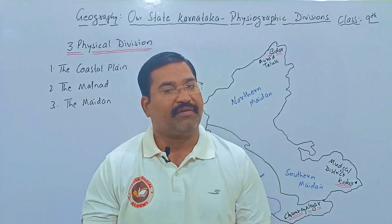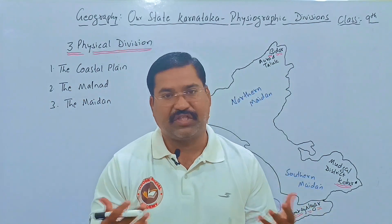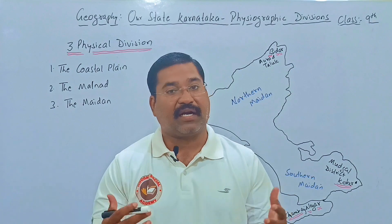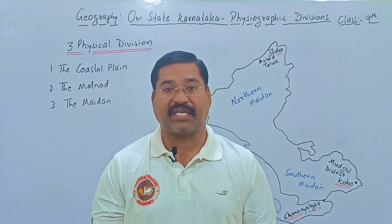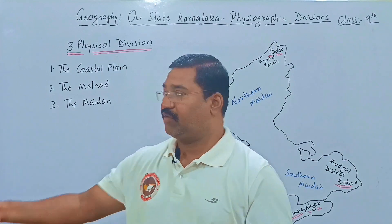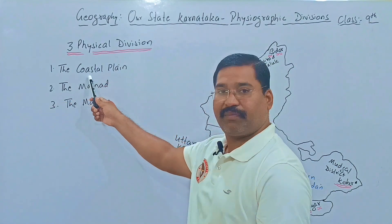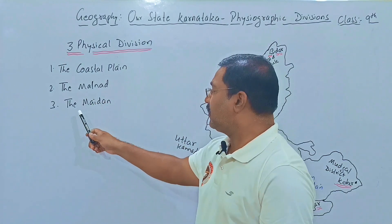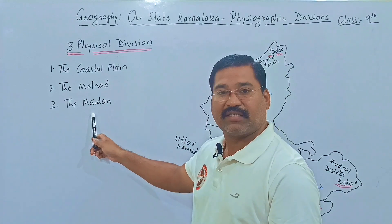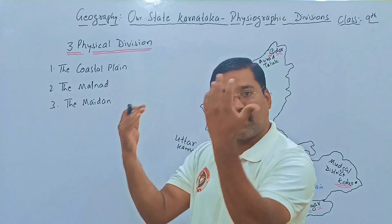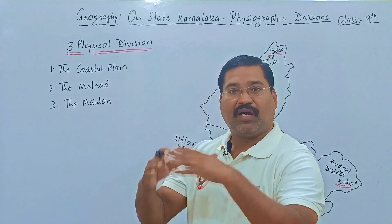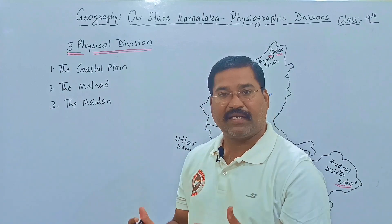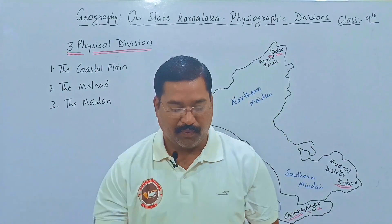Karnataka, on the basis of its relief features, is divided into three physical divisions. The first physical division is called the coastal plain, the second one is called the Malnad area, and the third one is called the Maidan area.